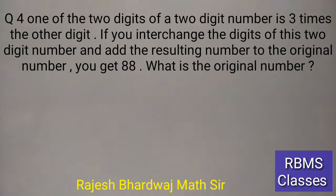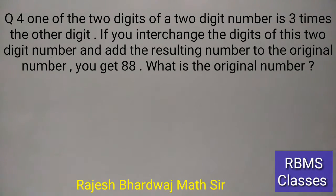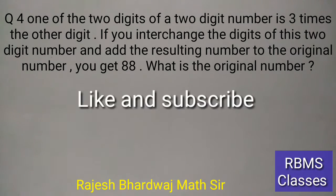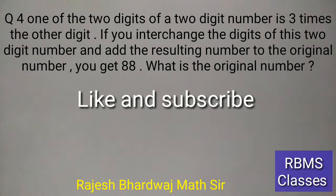One of the two digits of a two-digit number is three times the other digit. If you interchange the digits of this two-digit number and add the resulting number to the original number, you get 88. What is the original number?